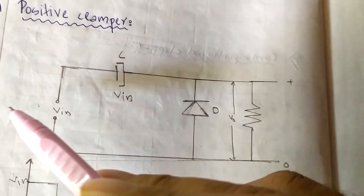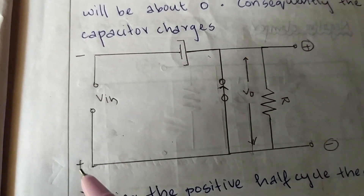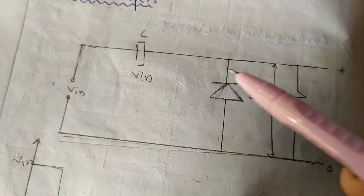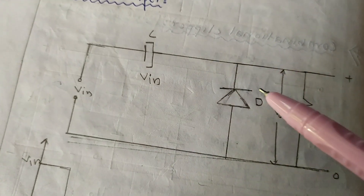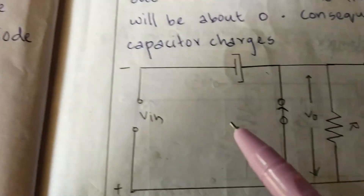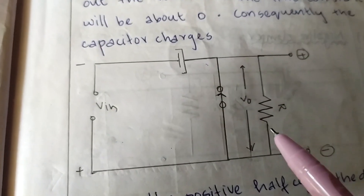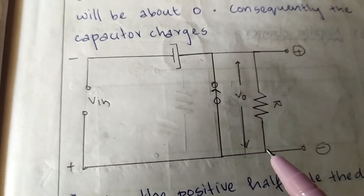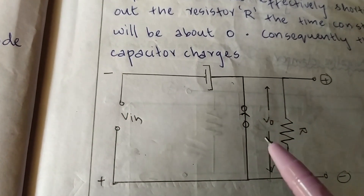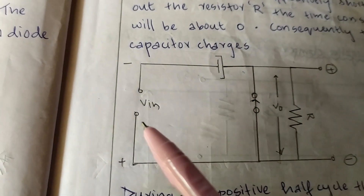This is a negative cycle. This is a shorter wire. It is a negative cycle. From the output,